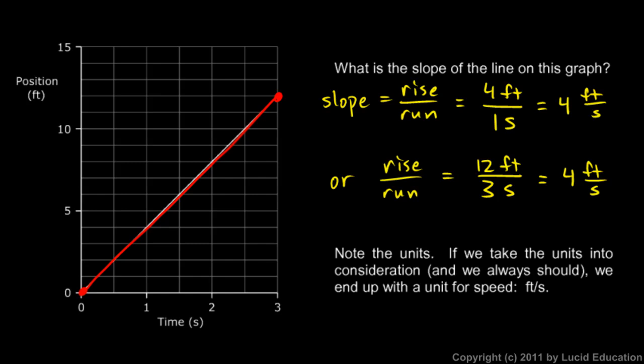This calculation that we do, calculating the slope, rise over run, when we actually do the math here, we're really doing the distance divided by the time. And distance divided by the time, you recognize, is our equation for average speed.